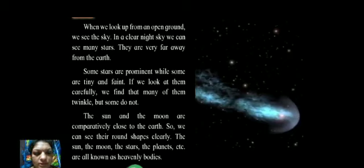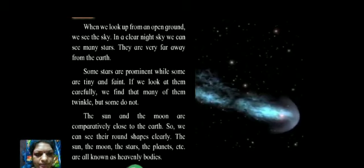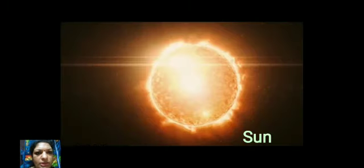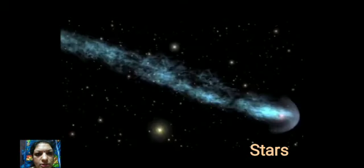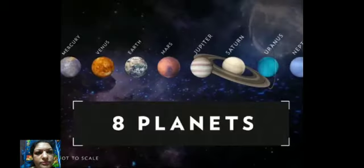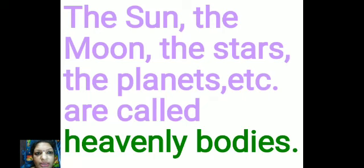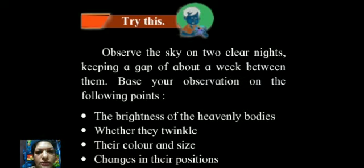If we look carefully, we find that many stars twinkle, but some do not. The Sun and the moon are comparatively close to the earth, so we can see their round shapes clearly. The Sun, the moon, the stars, and planets together are called heavenly bodies.